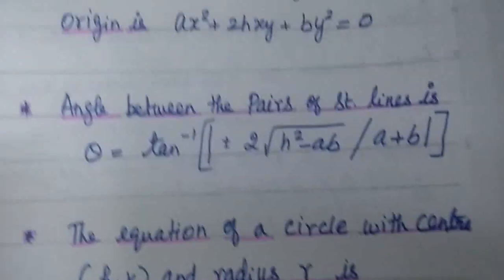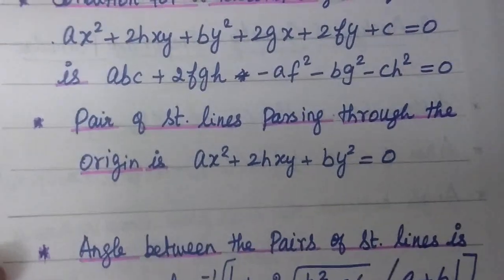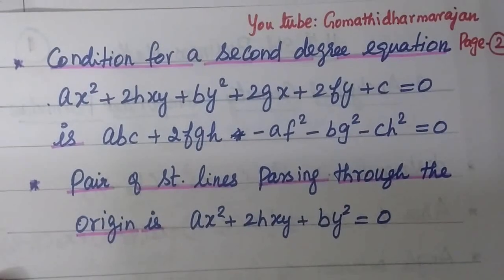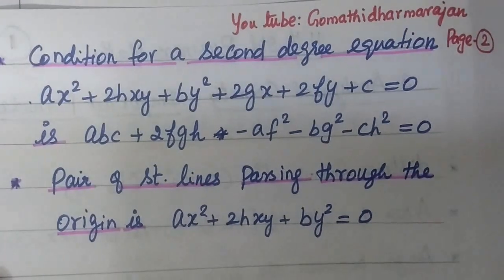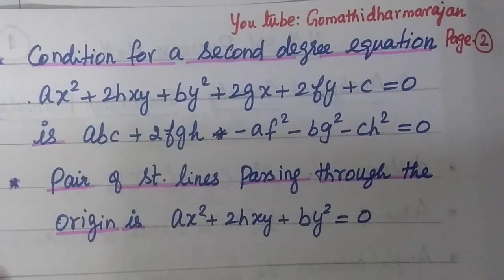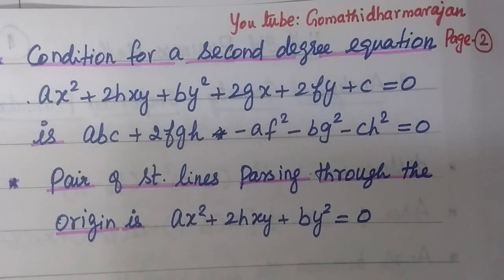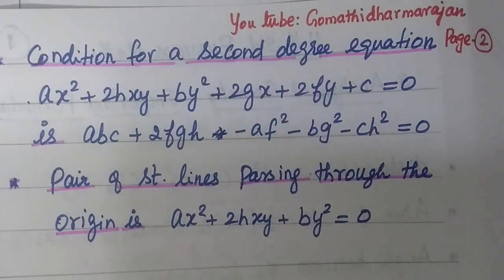Coming to the next formula: the condition for a second degree equation ax squared plus 2hxy plus by squared plus 2gx plus 2fy plus c equal to 0 to represent a pair of straight lines is: abc plus 2fgh minus af squared minus bg squared minus ch squared equal to 0.